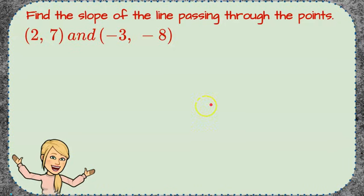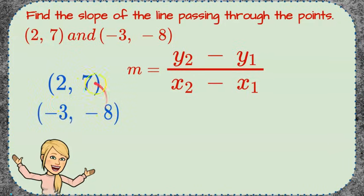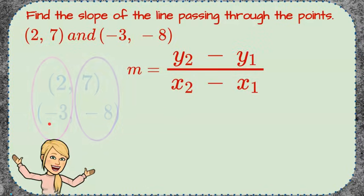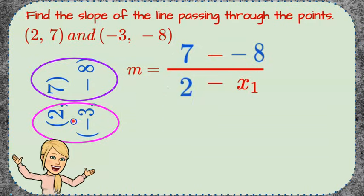Now let's use everything we've learned. We're going to find the slope of the line passing through the points (2, 7) and (-3, -8). Using our slope formula — change in y over change in x — we stack our ordered pairs, placing y-coordinates in the numerator and x-coordinates in the denominator. So we have seven minus negative eight in the numerator, and two minus negative three in the denominator.